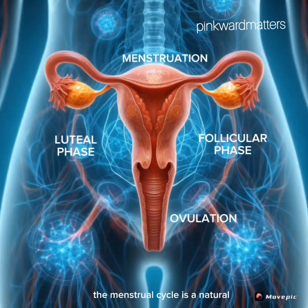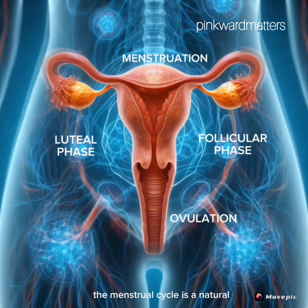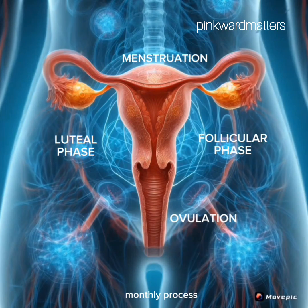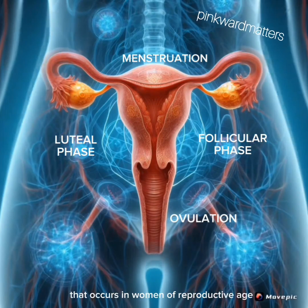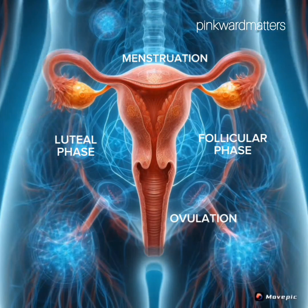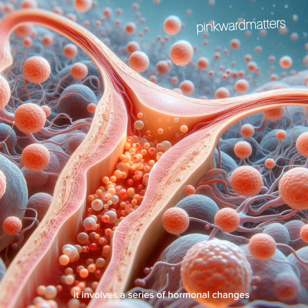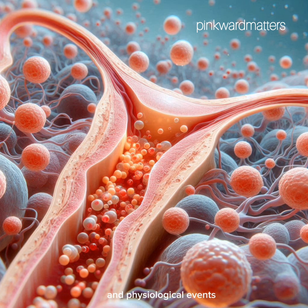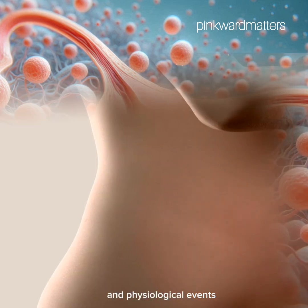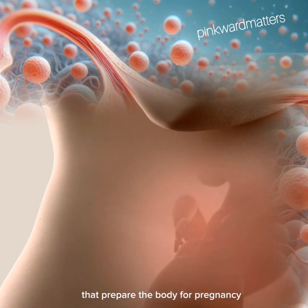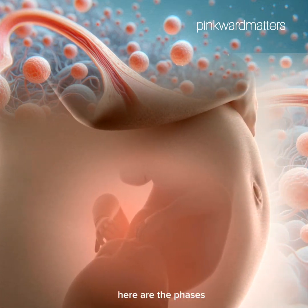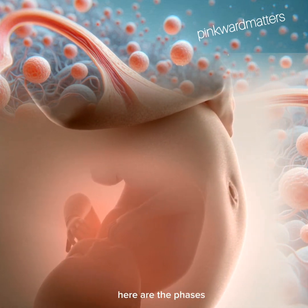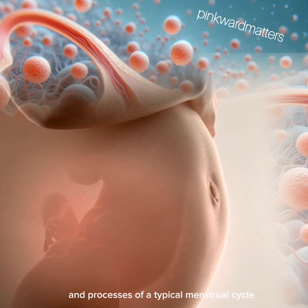The menstrual cycle is a natural monthly process that occurs in women of reproductive age. It involves a series of hormonal changes and physiological events that prepare the body for pregnancy. Here are the phases and processes of a typical menstrual cycle.